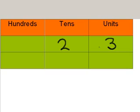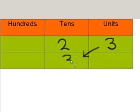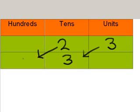You all know that three times ten is thirty. So what happens to the three is it moves along one column, and it ends up in the tens column. Twenty times ten is two hundred, so the two also moves along one column and ends up in the hundreds column.